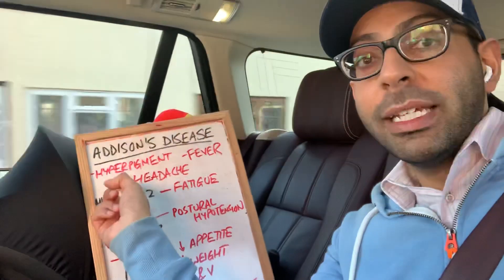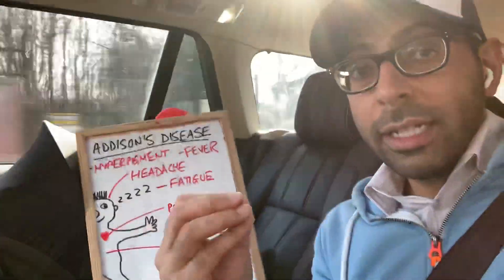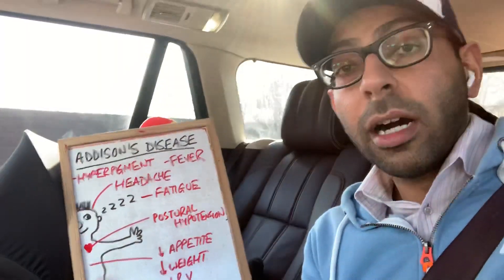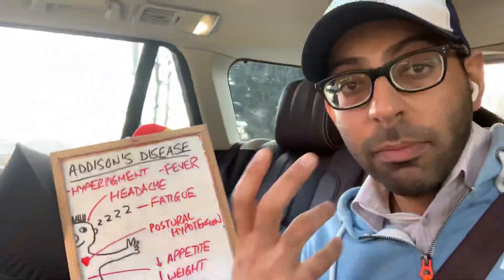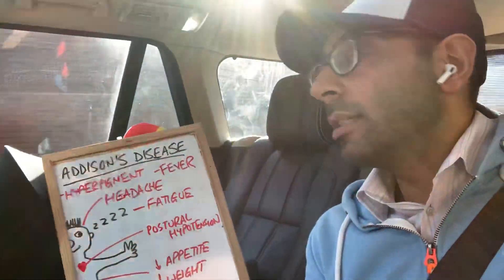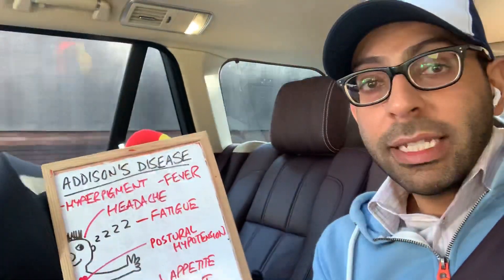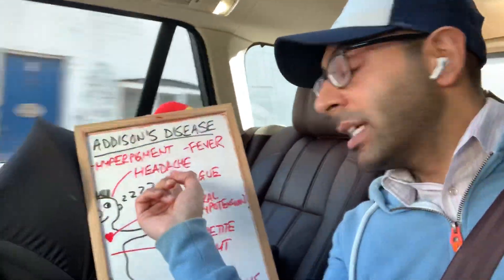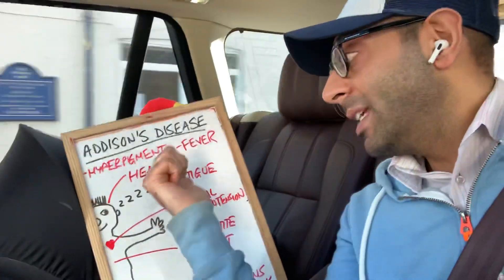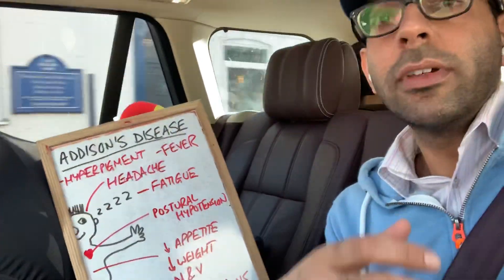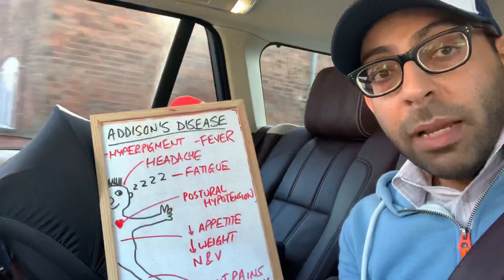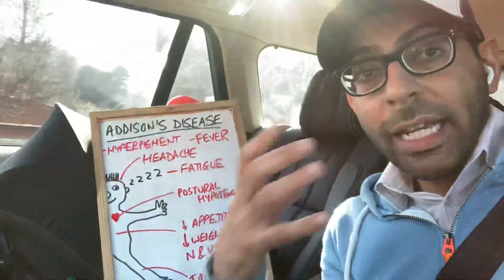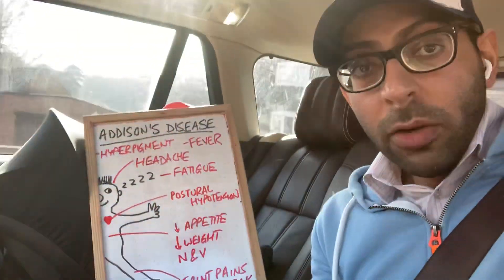We'll start with hyperpigmentation — a lot of people think about this. Darkened areas of skin, particularly around scar areas, skin creases, and mucous membranes. Low-grade fever might be a presentation over a long period of time. Headaches might be a presenting feature. Fatigue — these are things in common with a lot of chronic conditions. Postural hypotension might be the first thing people get, so dizziness when they stand up.